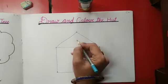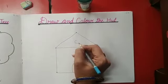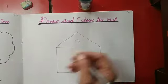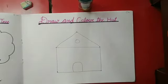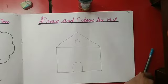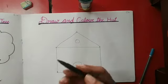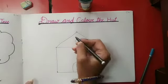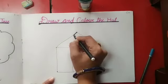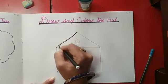And now we will make a small circle. Yes, our hut is ready. We will make a pencil cover. Then we will use black sketch pen. And do the outline with the black sketch pen.